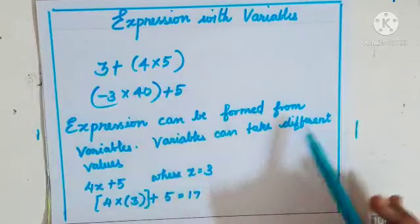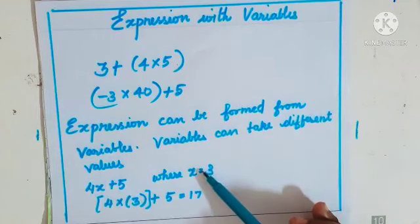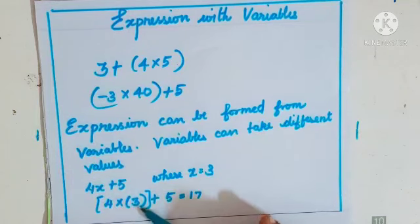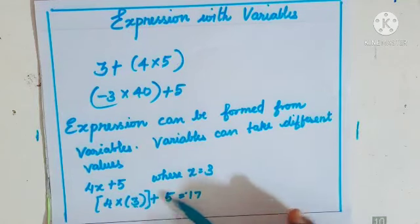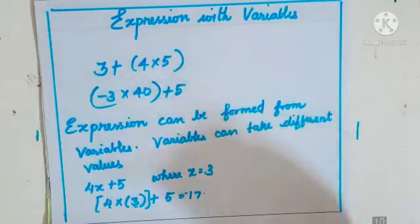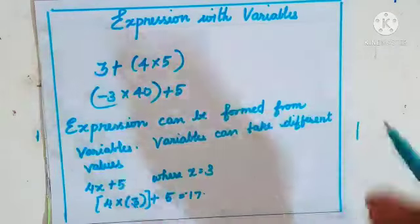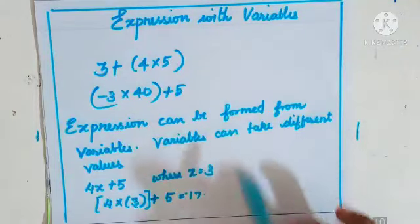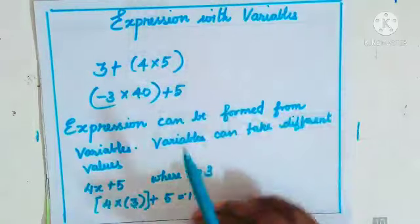The variable can take different values. For example, 4x + 5 — if x equals 3, then it means 4 into 3 plus 5. Four threes are 12, and 12 plus 5 is 17. I can vary x — I can put 5 or 4 or anything else. So the variable can take different values.